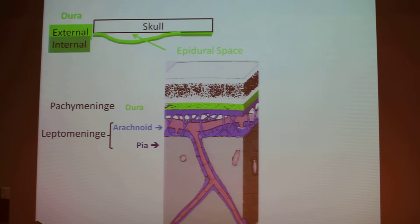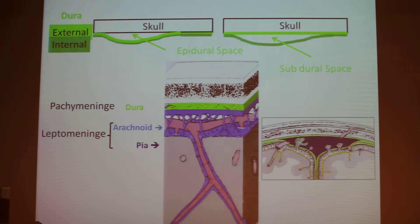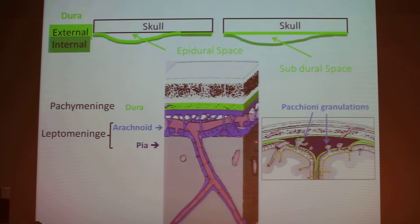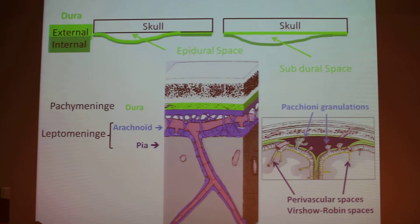In between the skull and the external layer of the dura is the epidural space, which is virtual and can be invaded by blood, for example. In between the two layers of the dura is the subdural space, which can also be invaded by many things including blood. The sinuses containing veins and blood are located between the two layers of the dura matter, and within these sinuses there are expansions of the arachnoid forming arachnoid granulations, which play a very important part in exchanges between blood and CSF. The perivascular spaces, which contain CSF, follow the vessels and can be enlarged, responsible for cystic formation in the brain.